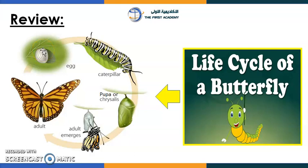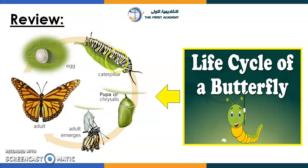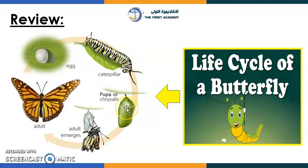Look over here — what can you see? A caterpillar! The caterpillar comes out of the egg, and as you can see, it will eat a lot. Then it moves to the third stage — what can you see? A pupa.